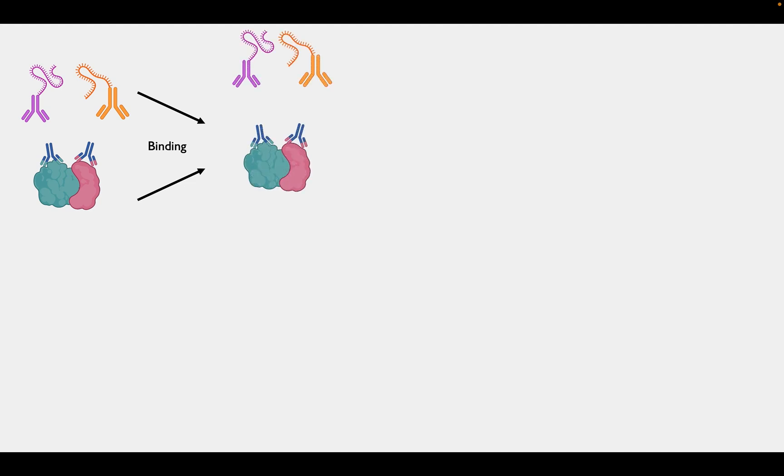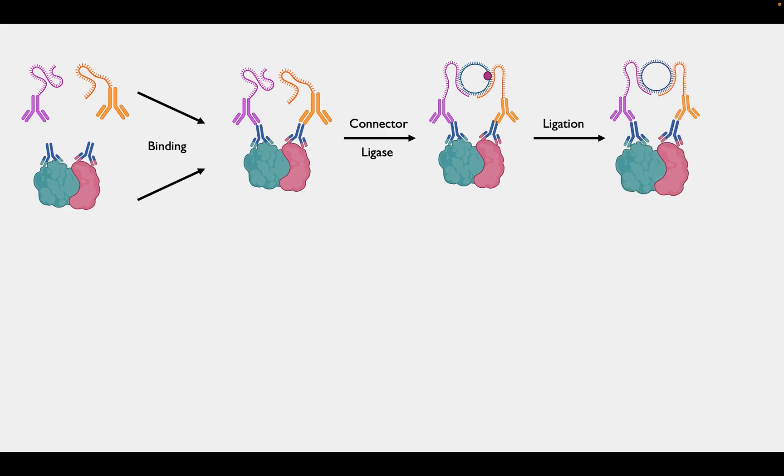covalently linked with the PLA probes, are introduced and bind to the primary antibodies on the proteins of interest. Connector oligonucleotides hybridize and bridge the two probes. Ligase seals the nick and then the DNA is replicated by rolling circle amplification with DNA polymerase and quantified.